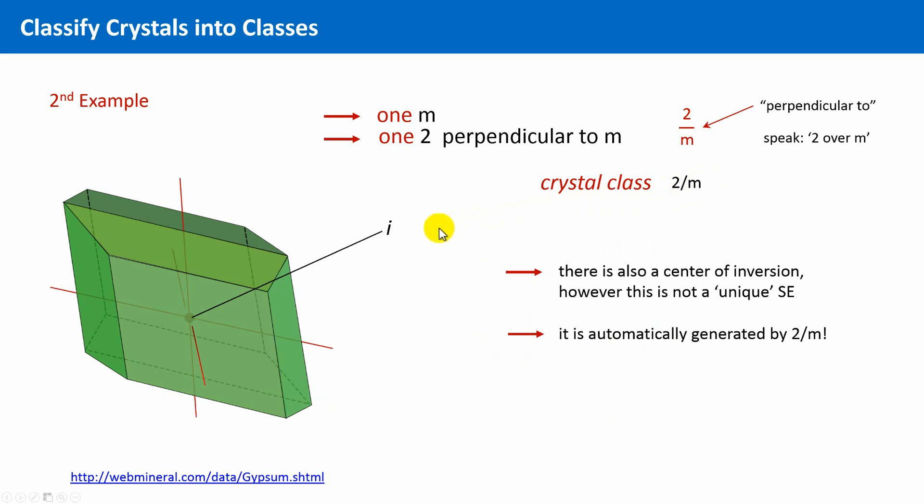Well, there is indeed another symmetry element, namely a center of inversion. However, this center of inversion does not have to be mentioned explicitly, because it is automatically generated by the other two symmetry elements. This means we only write down the unique symmetry elements, only the symmetry elements which are not generated by the presence of other symmetry elements.